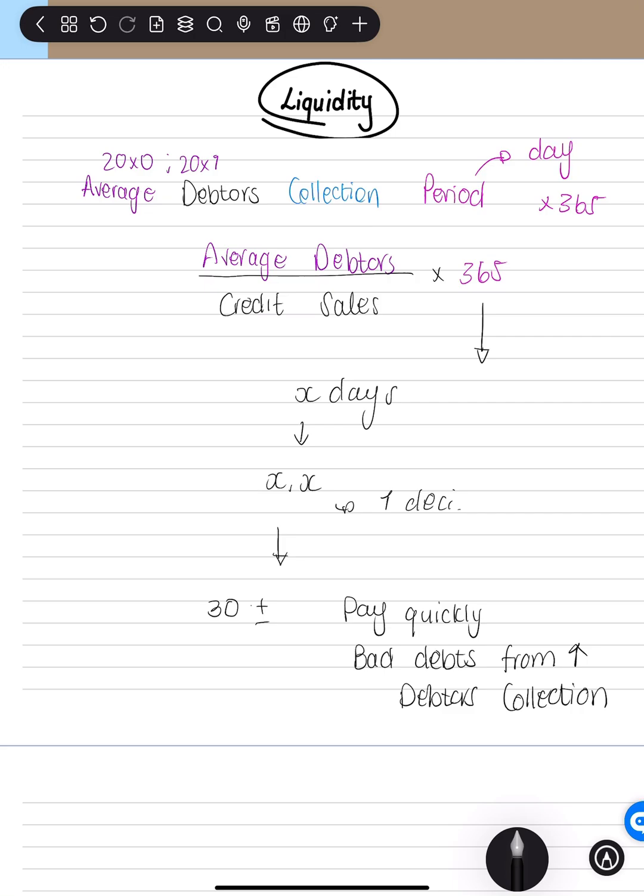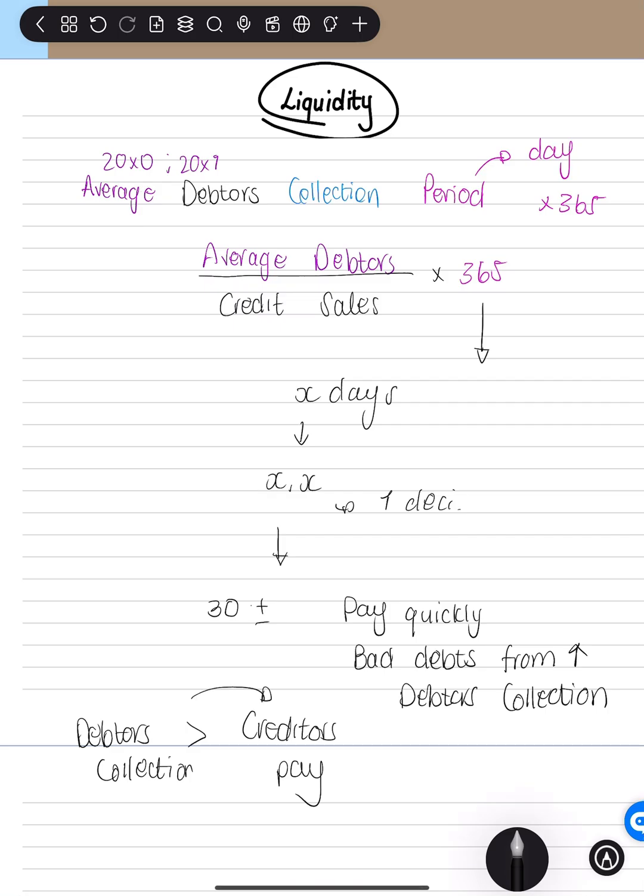Okay, and again, this links to creditors' payments period. You want it to be shorter. So debtors collection, you want it to be shorter, the period. So it will be shorter than your creditors' payments period. Okay, so you need to receive this money first so you are liquid. You do have money on hand before you pay your creditors.